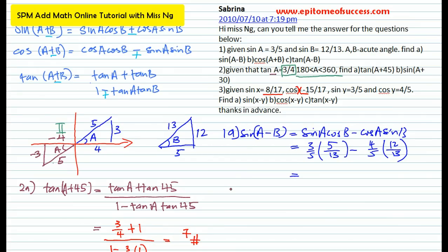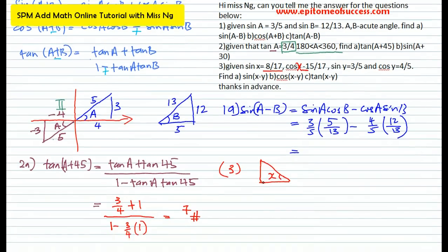So for Question 3, I'm going to draw a new triangle — each question requires its own triangle. X is in the second quadrant, so the triangle will be like this. Sine X is 8 over 17, so the vertical side is 8 and the hypotenuse is 17. And the horizontal side is negative 15 because cos X is negative 15. So you have drawn your triangle for X. Now do the same for Y.